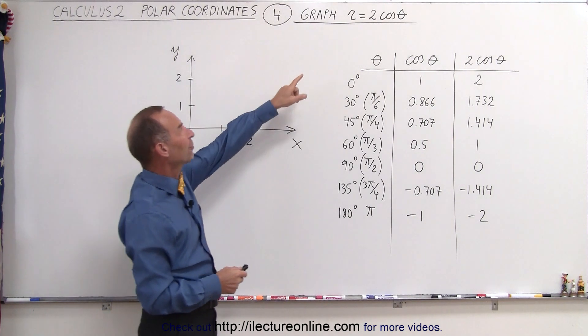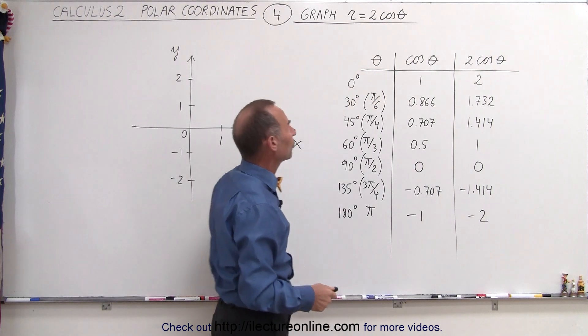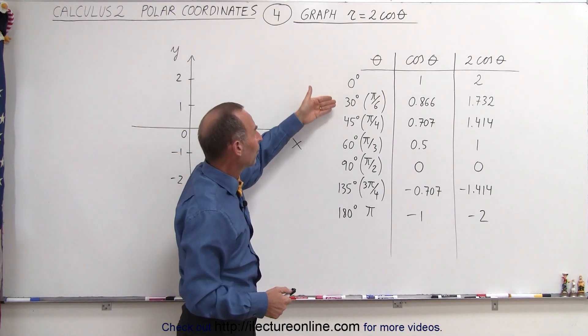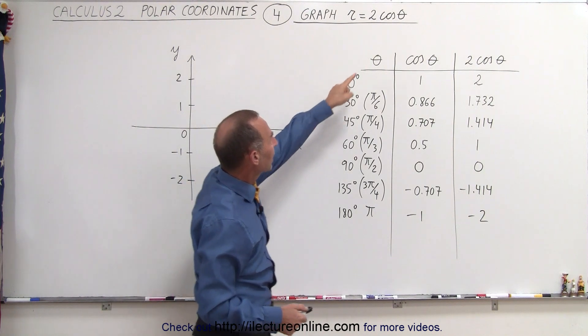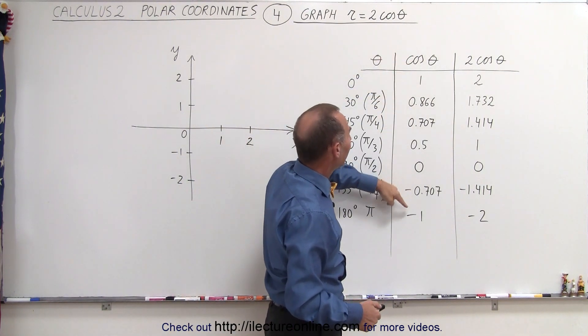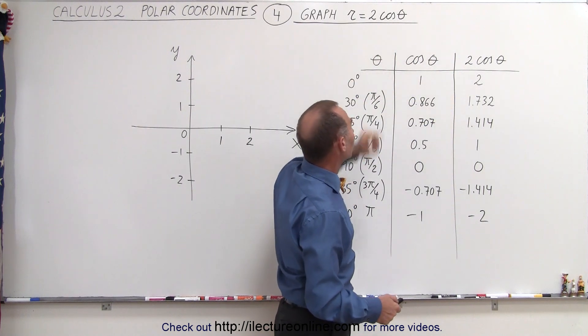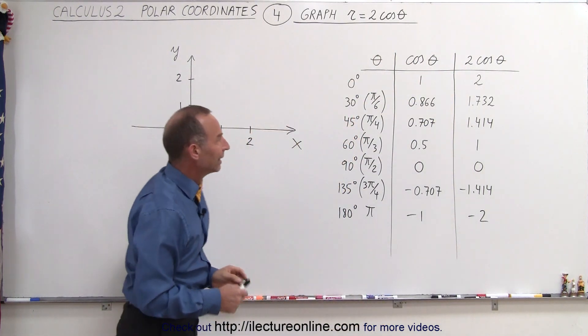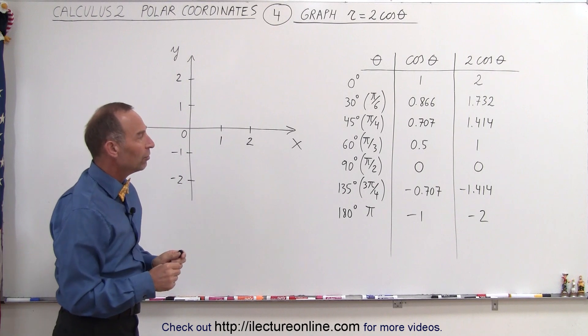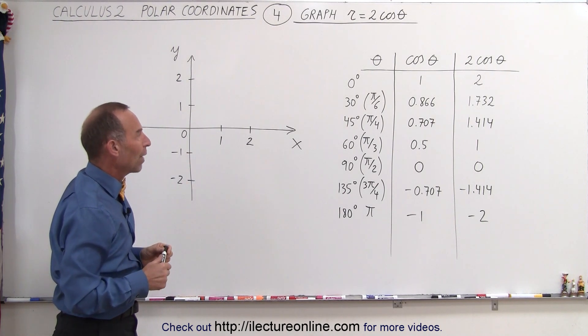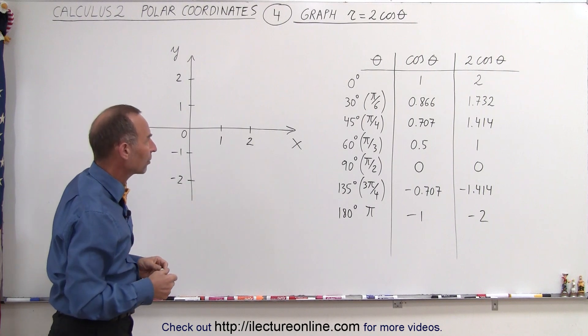So let's say we try to graph the function r equals twice the cosine of theta. What you want to do is put in a number of values for theta, then take the cosine of theta, and then multiply that times 2, 2 times the cosine of theta, which, after all, is equal to r. Then you go ahead and plot these points, and you can see what it looks like and connect the points to form the graph on the xy-axis.